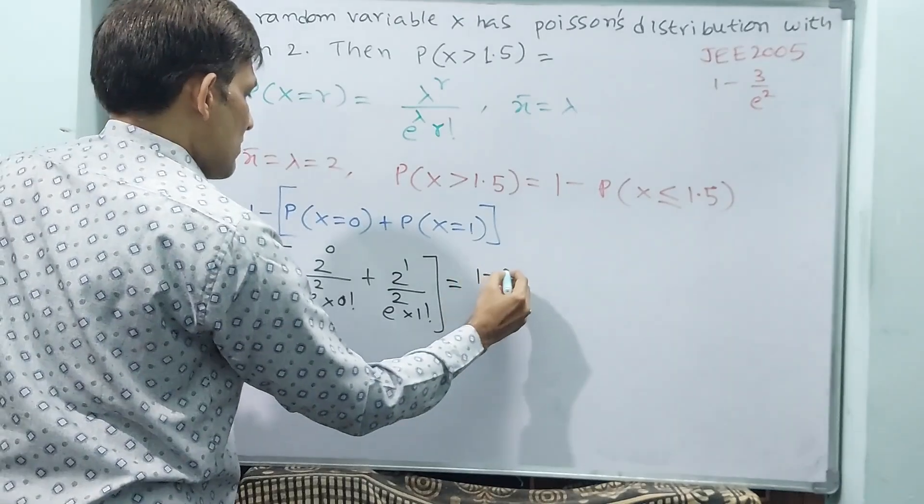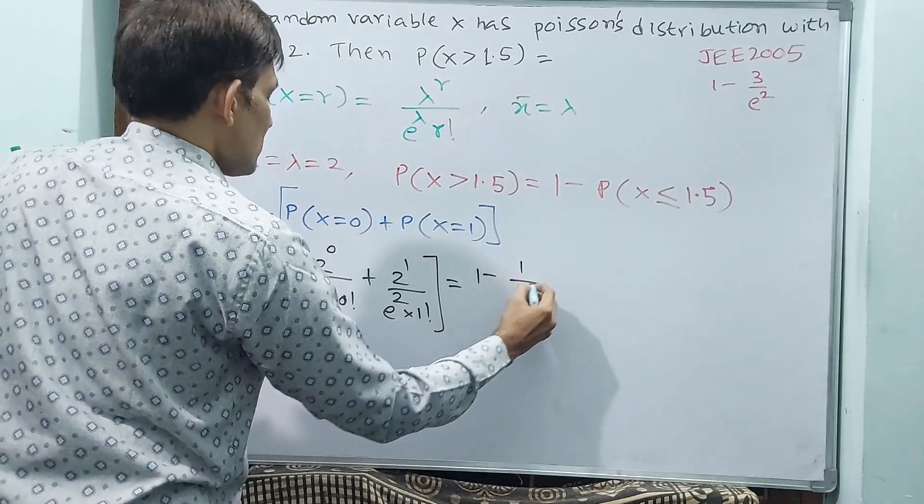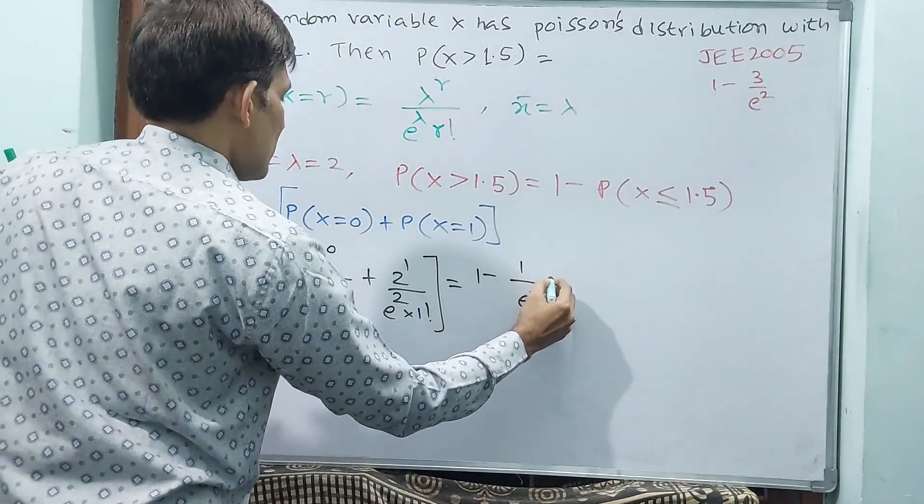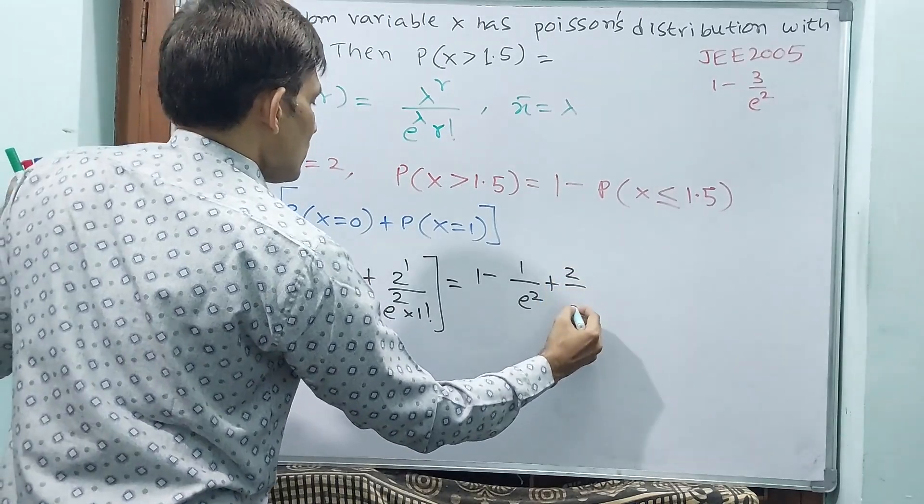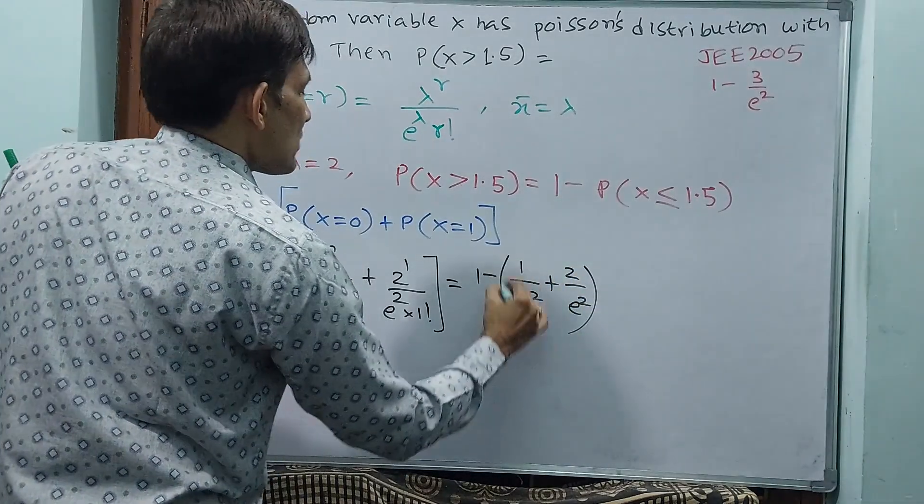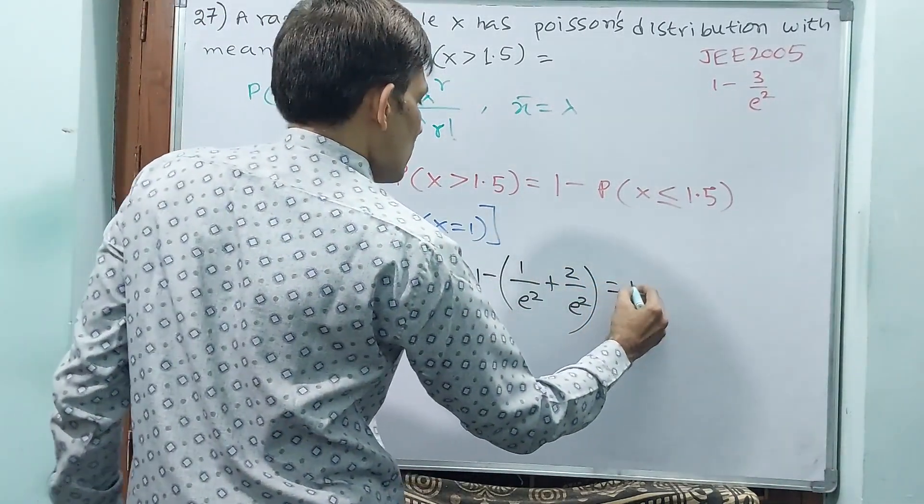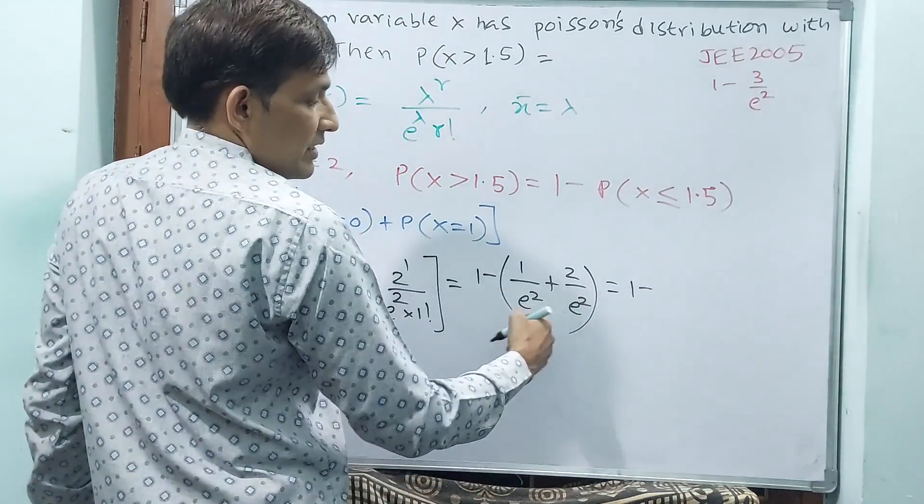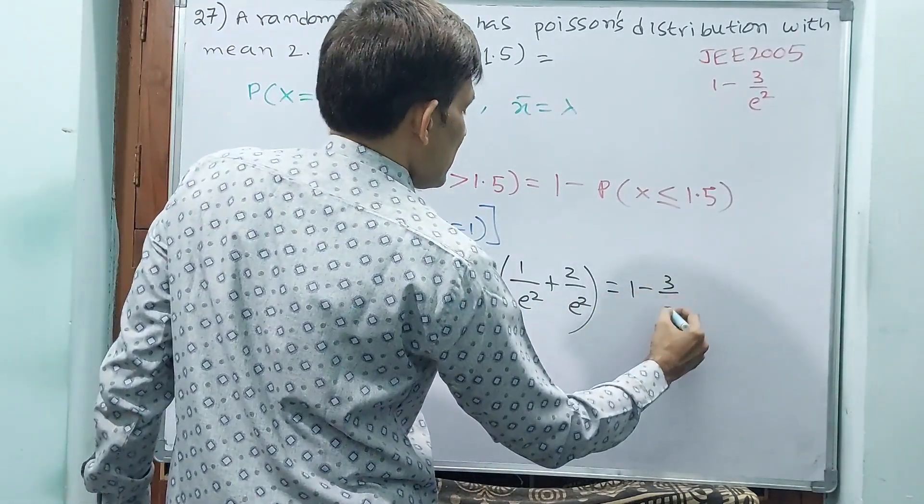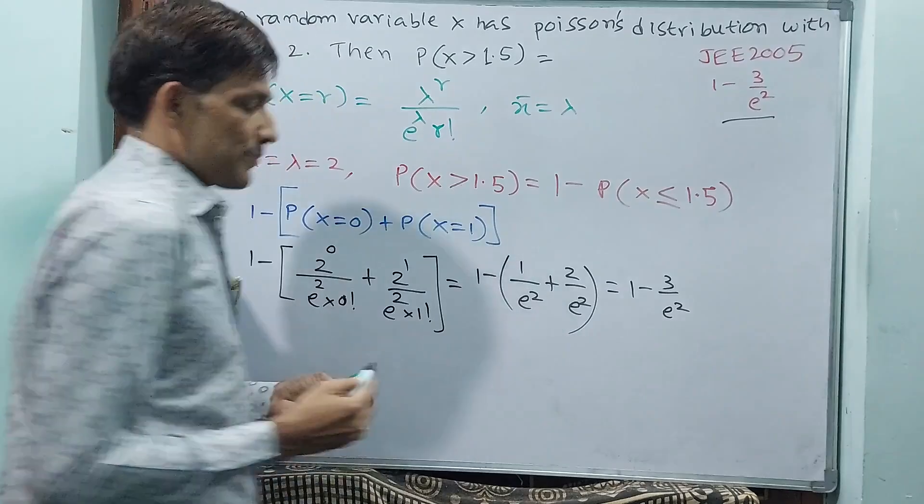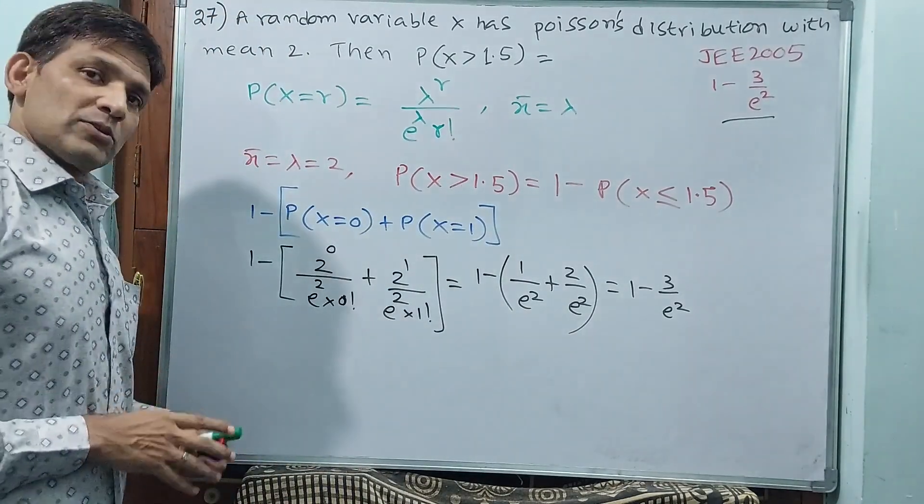That is equal to 1 minus 2 power 0 means 1 by e square plus 2 by e square, both are in the bracket. That is equal to 1 minus 3 by e square. That means, 3 by e square. Is this the answer? Now, let us go to the next question.